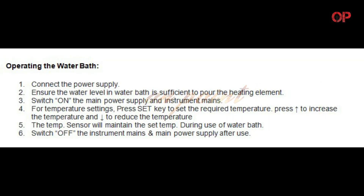Operating the Water Bath: 1. Connect the Power Supply. 2. Ensure the water level in the water bath is sufficient to cover the heating element. 3. Switch on the Main Power Supply and Instrument Mains. 4. For temperature settings, press the Set Key to set the required temperature. Press the Upward Arrow to increase the temperature and Downward Arrow to reduce the temperature. 5. The Temp Sensor will maintain the set temperature during use of the water bath. 6. Switch off the Instrument Mains and Main Power Supply after use.